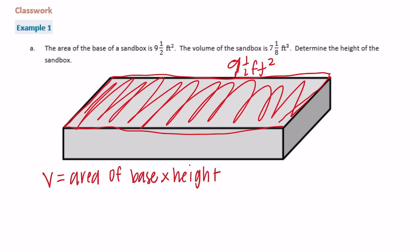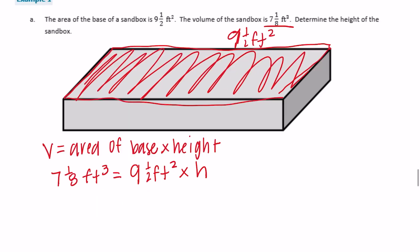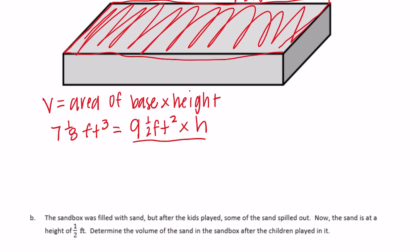Let's fill in what we know. We know the volume is 7 and 1/8. So 7 and 1/8 feet cubed is equal to the area of the base, 9 and 1/2 feet squared, times the height. We don't know the height, so what we can do is divide by 9 and 1/2 feet squared to figure out the height.